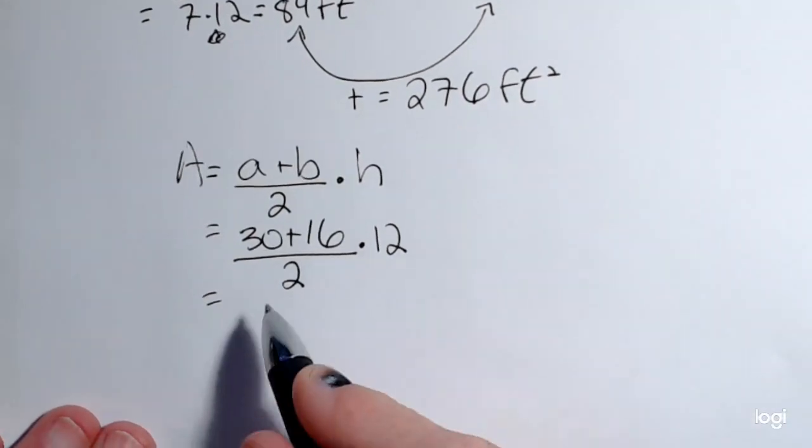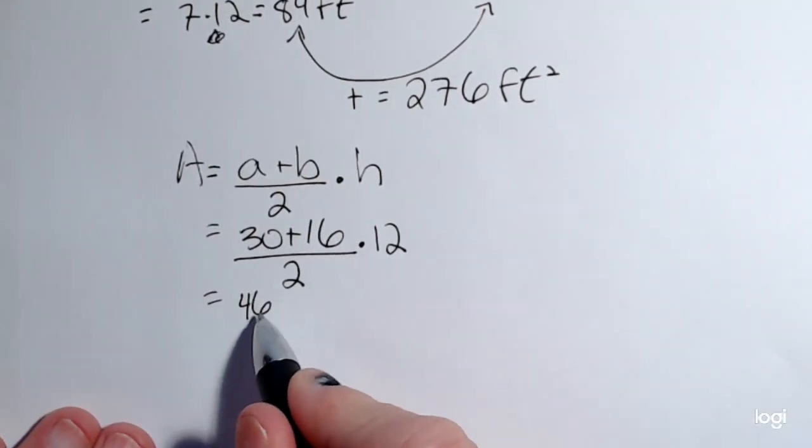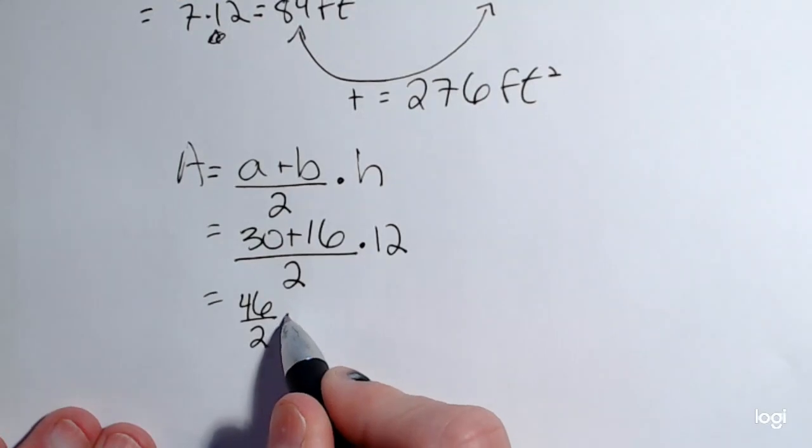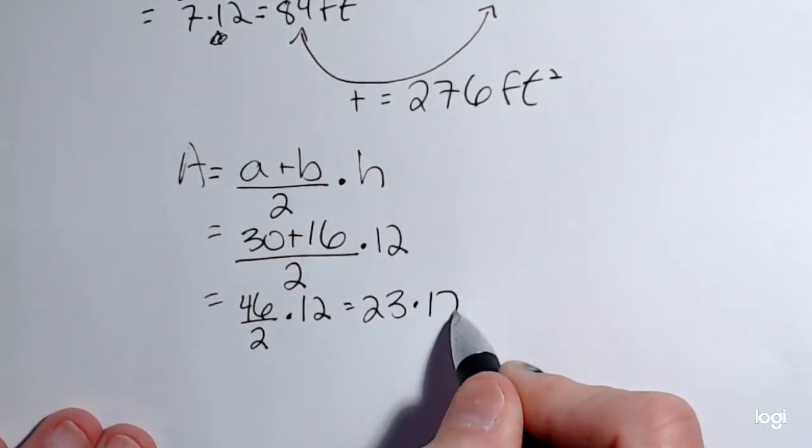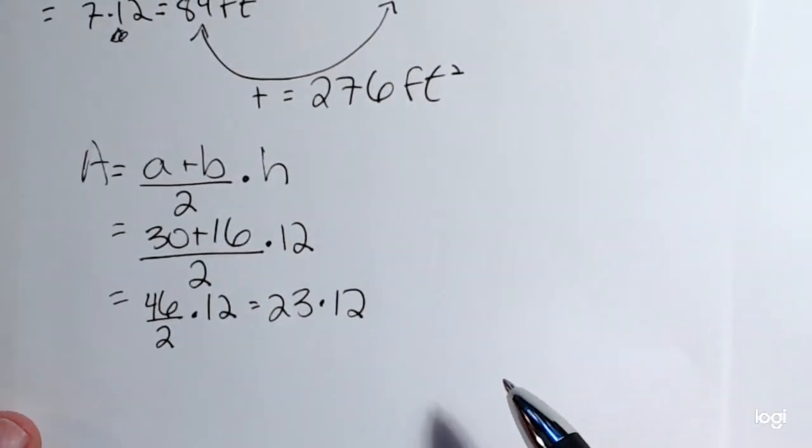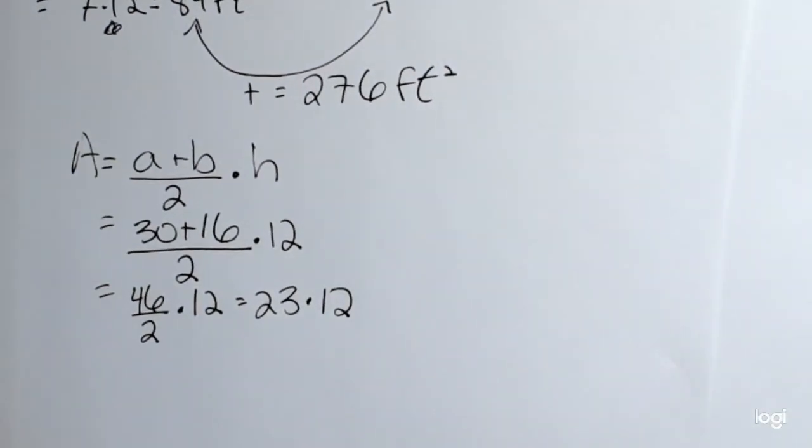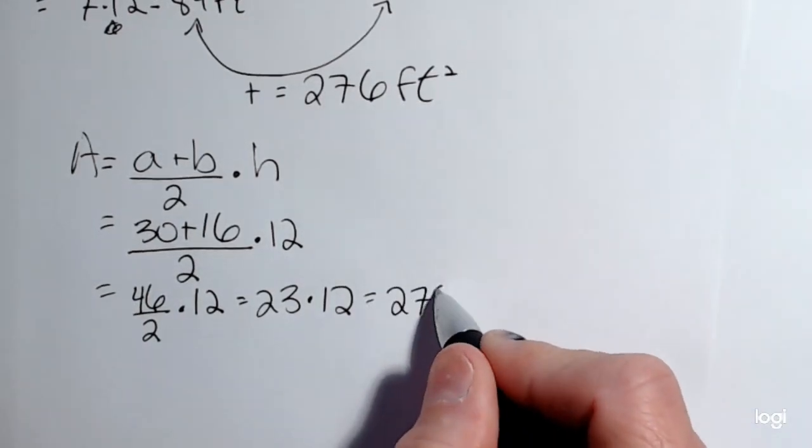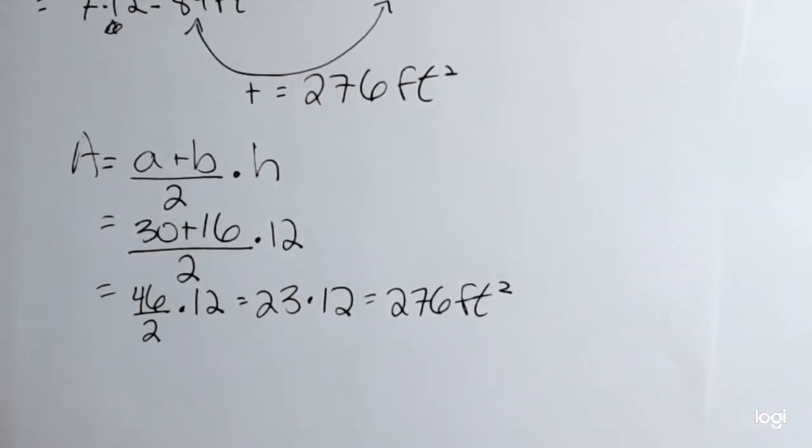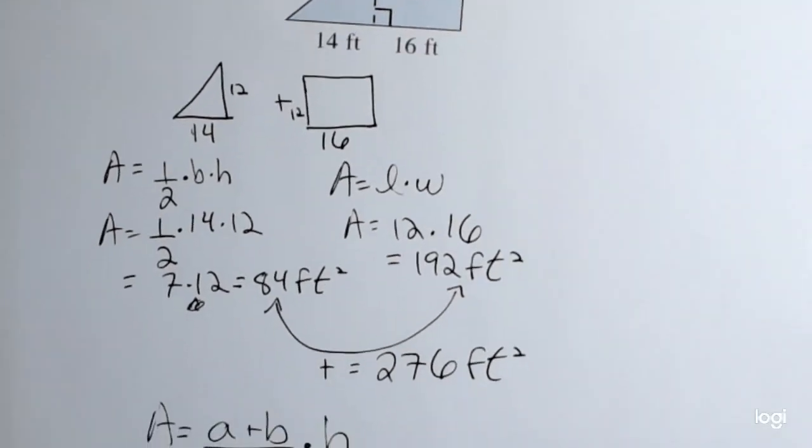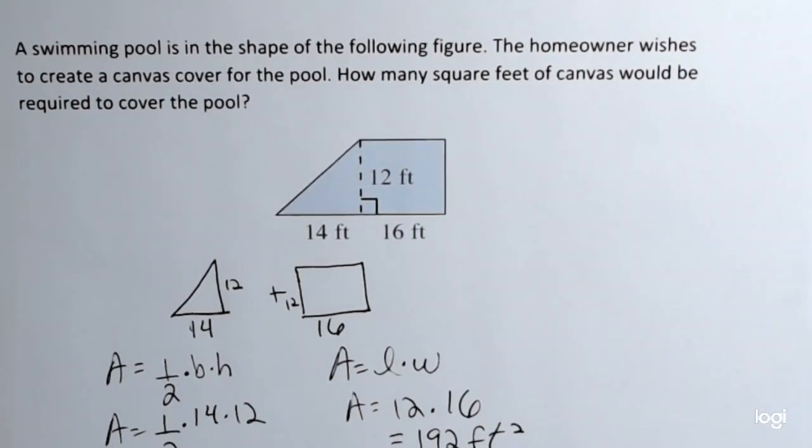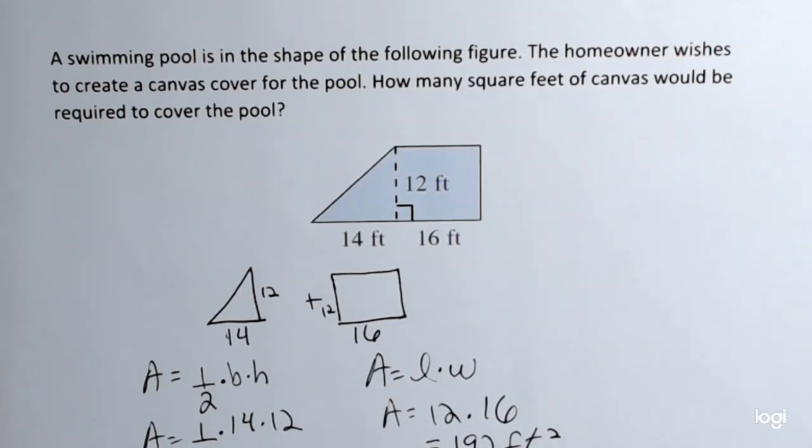Putting this all together, I have 46 divided by two times 12, and that's 23 times 12. And putting that in my calculator, comes up to the same thing, which is what I had expected. So either of these methods to find this area are fine. Just take your pick.